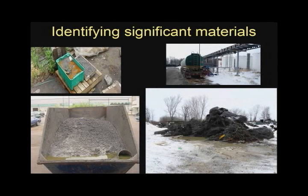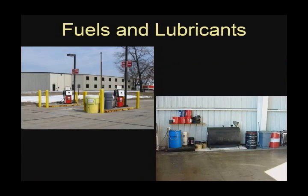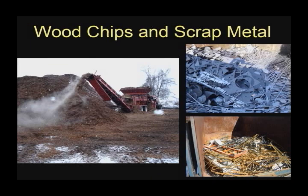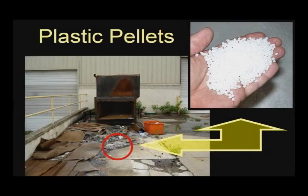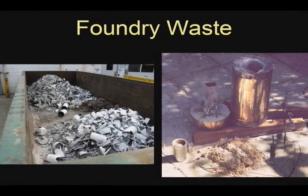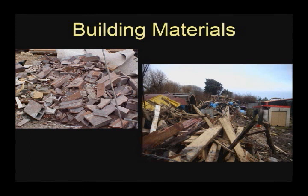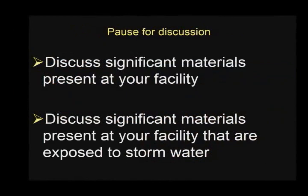The Certified Operator has to know what a significant material is in order to identify sources of significant materials. A significant material is any material that can degrade or impair water quality. Examples include, but are not limited to, soil, salt piles, raw materials, fuels and lubricants, solvents and detergents, wood and metal chips, plastic pellets, fertilizers and pesticides, food products, waste products, foundry sand, ash and slag, polluting materials, wastewater, and building materials. Identify the significant materials at your facility and which significant materials are exposed to stormwater.